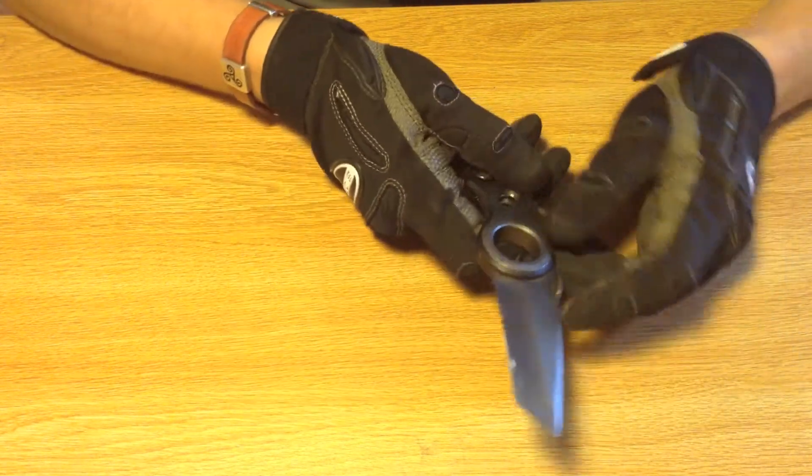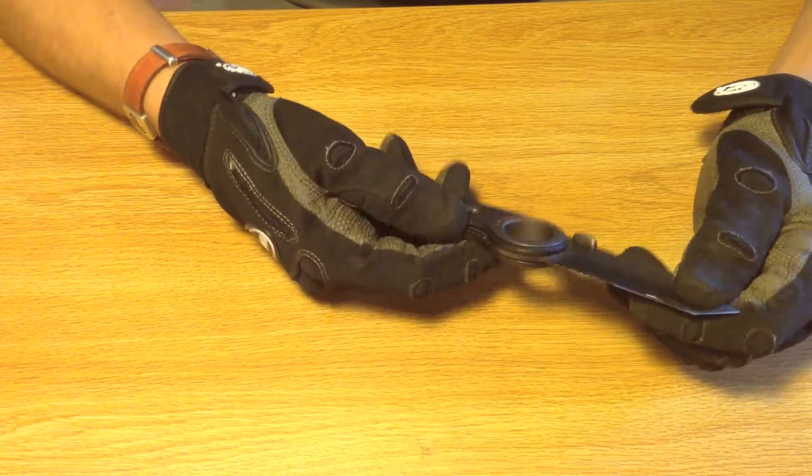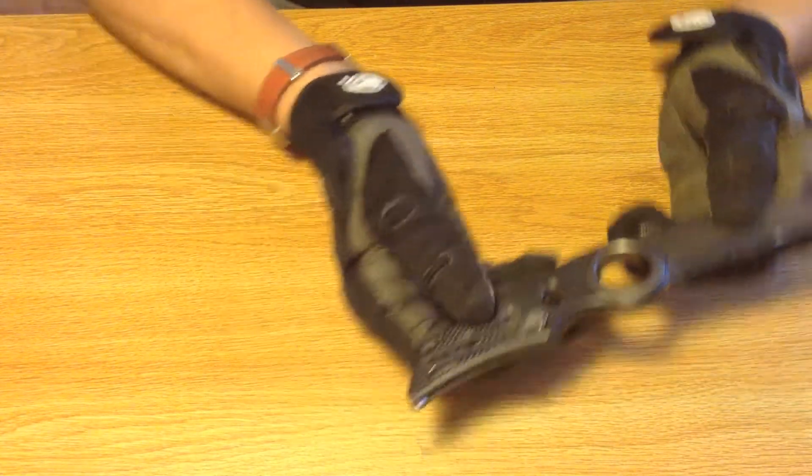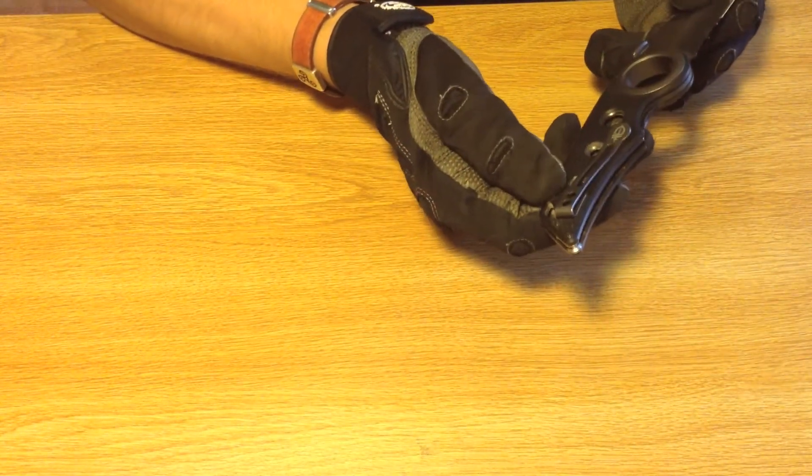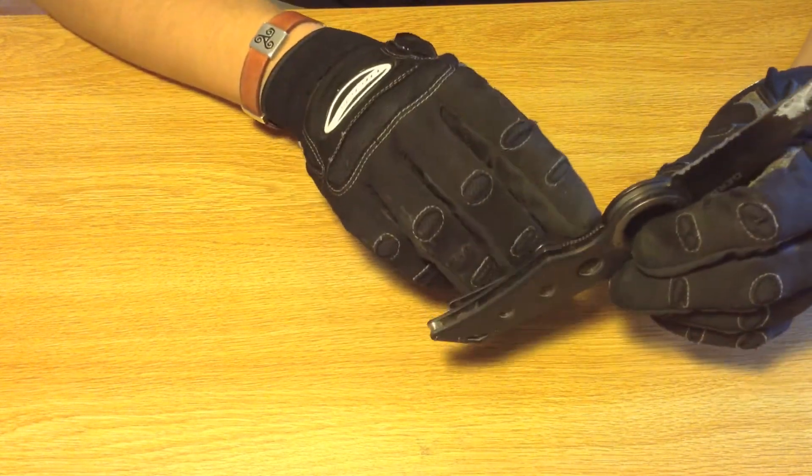Instead of a thumb stud, it has this thumb panel right here. It is a tanto design, partially serrated. And it has a tip up pocket clip with a lanyard hole, if you so desire. It is a liner lock, and a pretty thin liner at that.